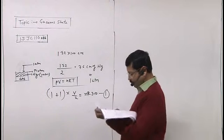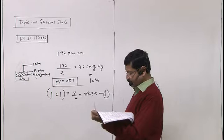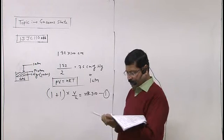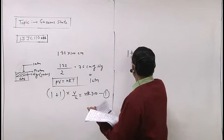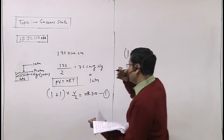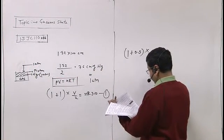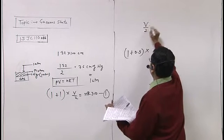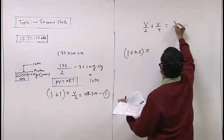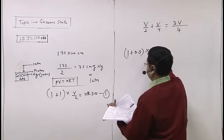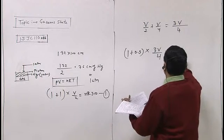Initially at 300 Kelvin, temperature is raised, half of the mercury comes out. Now half is left, so some volume increased - V by 2 plus V by 4. So this is the gas pressure.